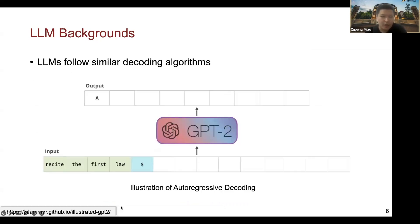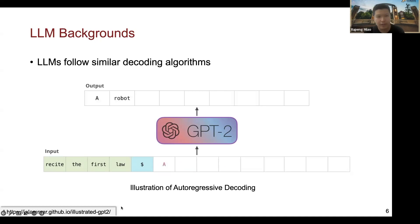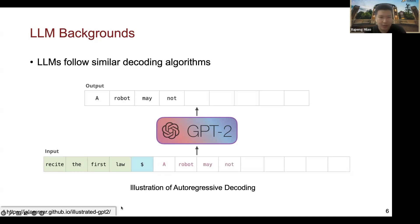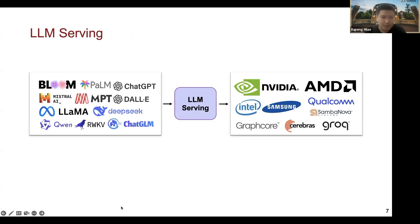Another background I'd like to mention is that today's large language models usually follow a very similar decoding algorithm called autoregressive decoding. Given an input prompt, it will generate the output tokens one by one, autoregressively. All the previously generated tokens and the input prompts will be used to predict the next token.